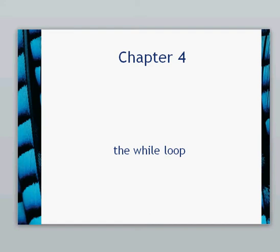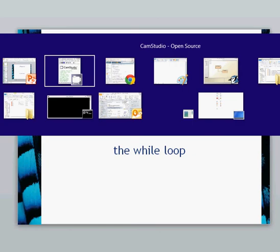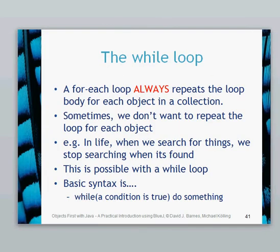Hello again. This is chapter 4 and we are looking into the while loop. As we've seen previously, the for-each loop always repeats the loop body for each object in a collection. Sometimes you don't necessarily want that. For example, if you're searching for something in a specific list, once you've found that particular item, you might not need to search through the rest of the list. However, in a for-each loop, you have to search the entire collection.